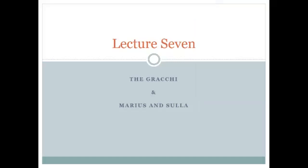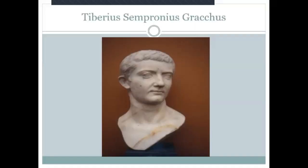It began with the tribunate of Tiberius Sempronius Gracchus, which we will be covering in this lecture. The Roman Revolution will continue down to about 31 BC and the Battle of Actium, which brought one man to power and initiated a period known as the Imperial Period in Roman history.